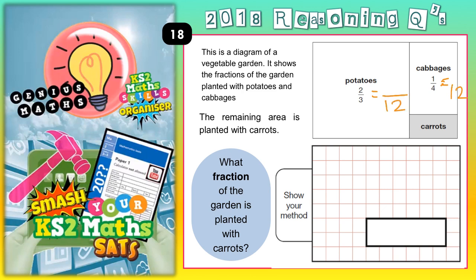So we're going to turn both of these into twelfths. To get from three to twelve, we're multiplying by four, so we need to multiply the two by four as well — two times four is eight, so that's eight twelfths. And to get from four to twelve is times three, so we need to times the one by three as well — one times three is three. So we're dealing with eight twelfths for potatoes and three twelfths for cabbages.